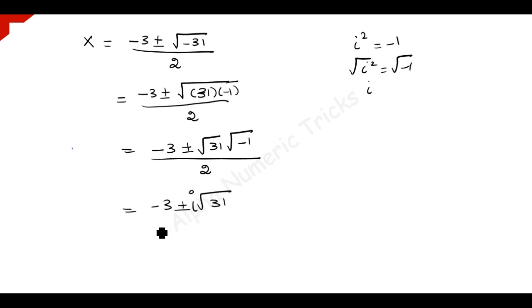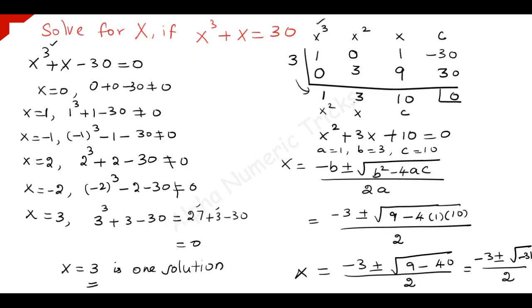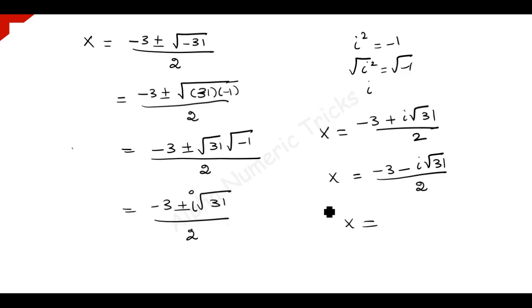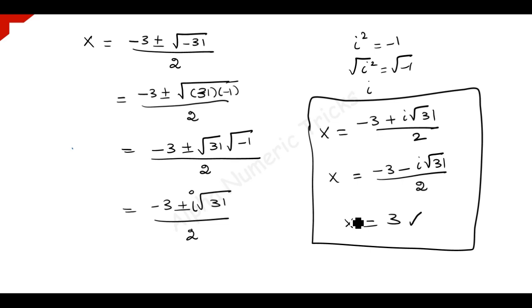So the other two solutions are x equals minus 3 plus i root 31 divided by 2, and x equals minus 3 minus i root 31 divided by 2. We already got one solution: x equals 3. If the problem asks to find real roots only, then x equals 3 is the only solution; but since nothing is mentioned in our problem, these are all three solutions. Thanks for watching. Subscribe to our channel.